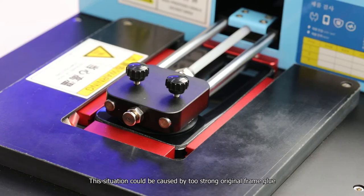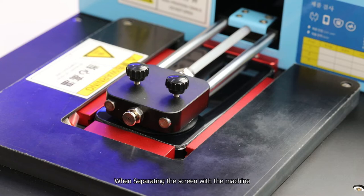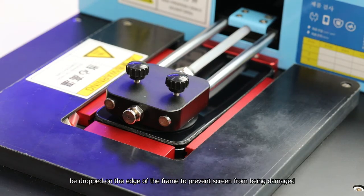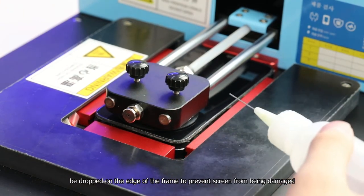This situation could be caused by too strong original frame glue. When separating the screen with the machine, we recommend using a small amount of alcohol dropped on the edge of the frame to prevent the screen from being damaged.